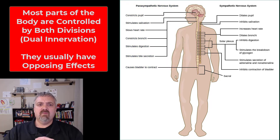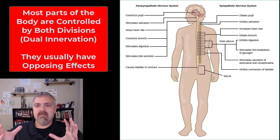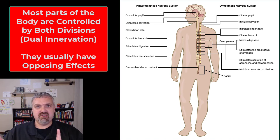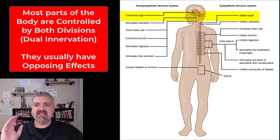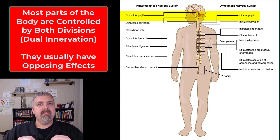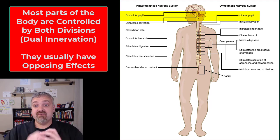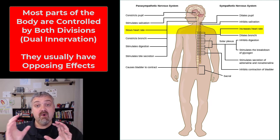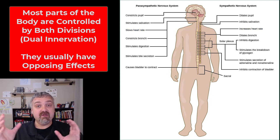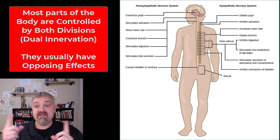Most parts of the body have what's called dual innervation — they're under control of both systems. And in most cases, they have opposing effects. The sympathetic nervous system dilates the pupils; the parasympathetic system does the opposite and constricts them. The sympathetic nervous system increases heart rate; the parasympathetic system decreases heart rate. So most parts of the body are controlled by both, and they have opposing effects.